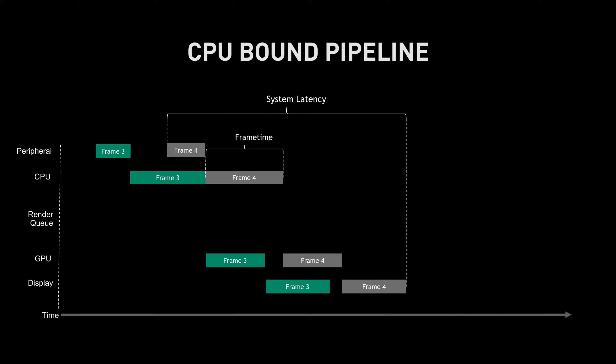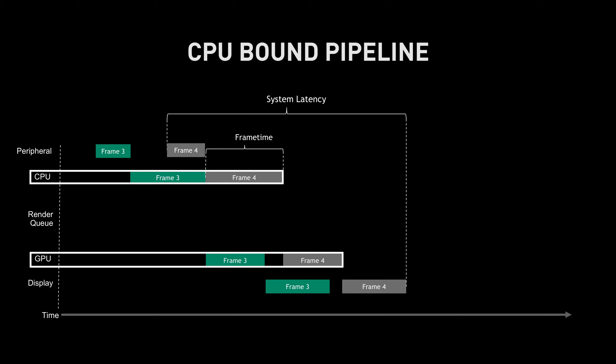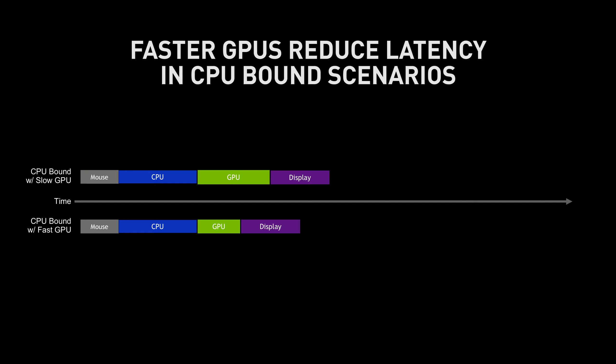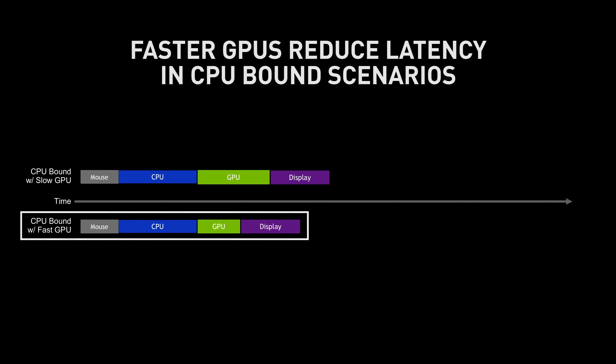At the other end of the spectrum is a CPU-limited game. In this scenario, the CPU is actually slower than the GPU, which means latency is small and there is no render queue, because the GPU can consume frames faster than the CPU can produce them. You may wonder: in a CPU-bound scenario, does the GPU make any difference at all? And the answer is yes. Even though the CPU is your limiting factor, the GPU's render time is an overall contributor to latency. A faster GPU reduces that render time, reducing overall latency even when you're CPU-limited.